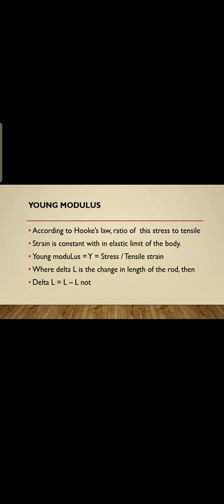The elastic limit means there is a limit for the body. Just like human beings and everything in the universe operates within limits — if they exceed the limit, it becomes dangerous. Similarly in physics, there lies a limit. If we apply greater stress on the body, greater strain is produced. If we apply less stress, then less strain is produced. It depends on how much stress we apply.